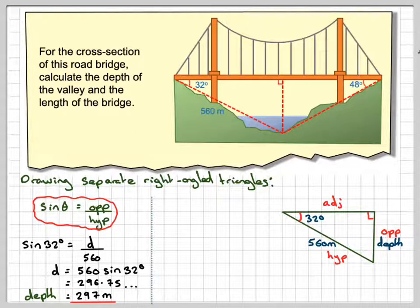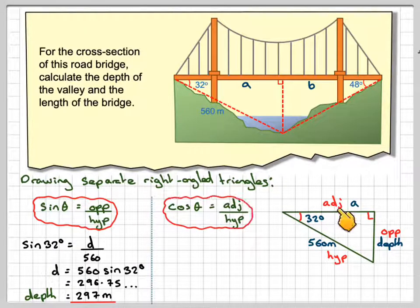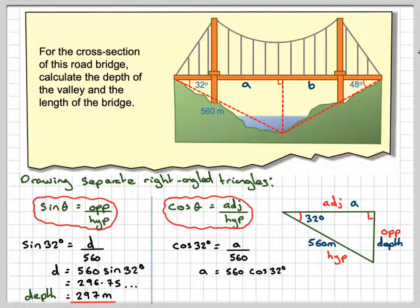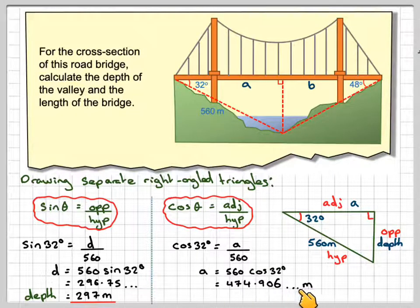Now calculating this length here, because this length here will give me part, this length A of the bridge, and this will need to calculate B using this triangle here. So cos, this time because we've got adjacent, so we're going to use cos. So cos theta is adjacent over hypotenuse. So cos of 32 will be equal to A over 560. And rearranging that, we're going to get that A is 560 cos 32, which is going to give me 474.906 metres.